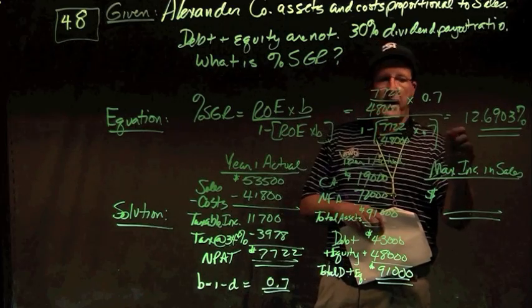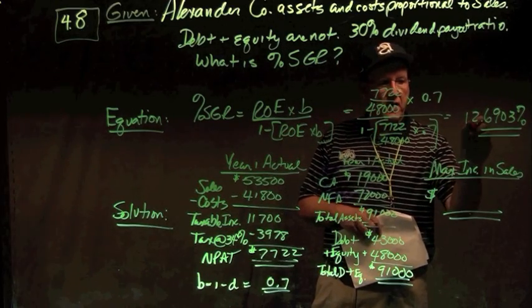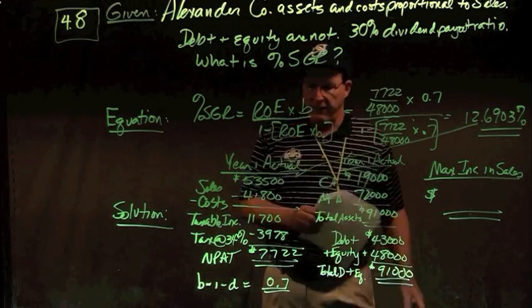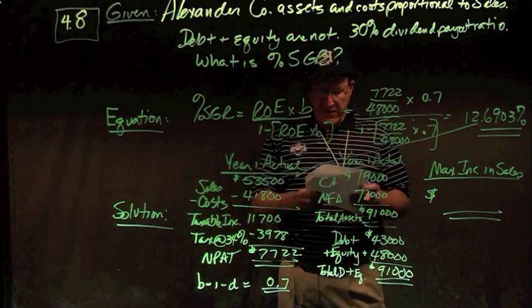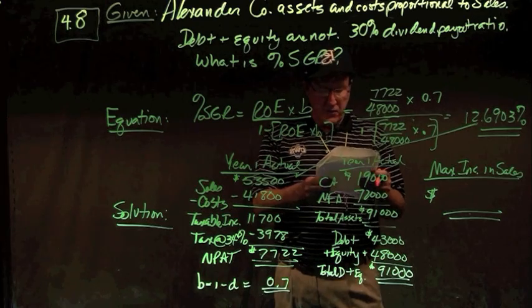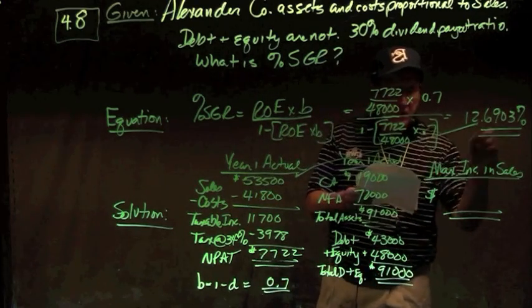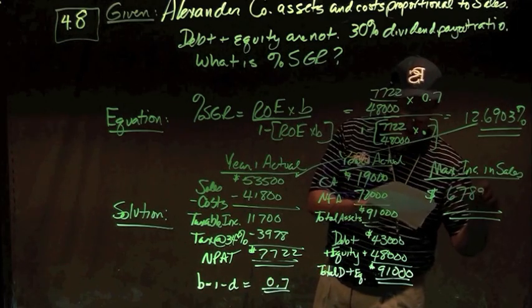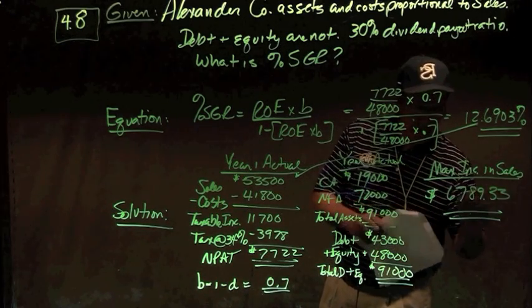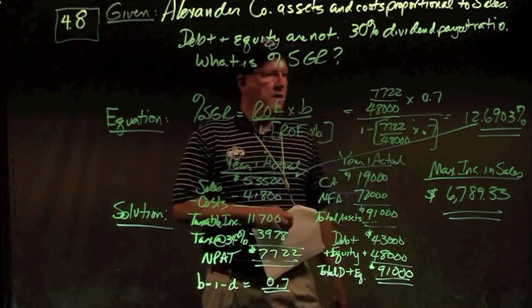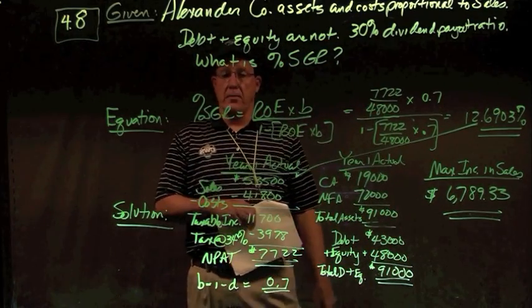My maximum increase in sales then is my 12.69% on top of my current sales figure of 53,500. So 53,500 times 1.126903, or 0.126903, and I get a max increase in sales of 67.8933. How did I get that? I took my 53.5 times 0.126903. There's your answer to problem number eight.